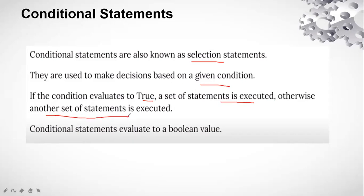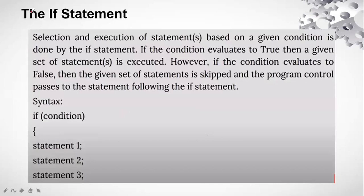Whenever we evaluate these conditional statements, we get a boolean value. In machine language, true or false is understood as zero and one. The condition is evaluated on the basis of zero and one — that is the boolean value: one for true and zero for false.